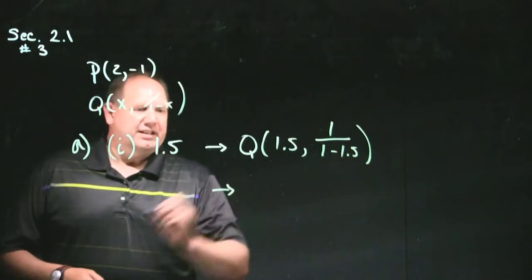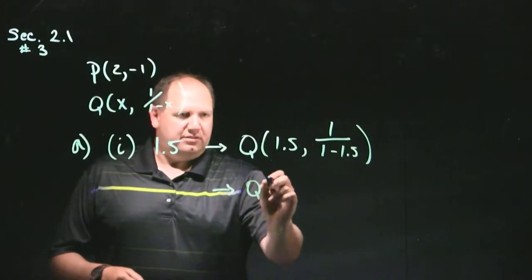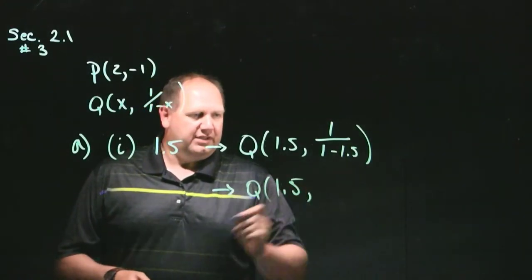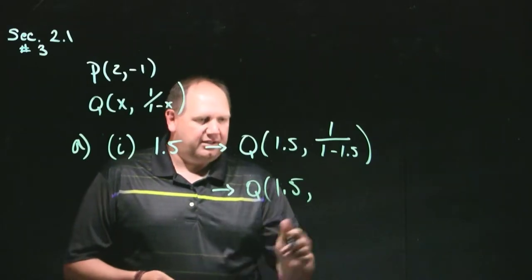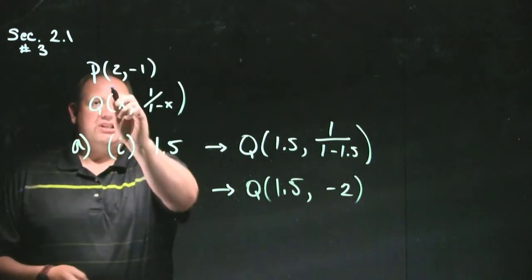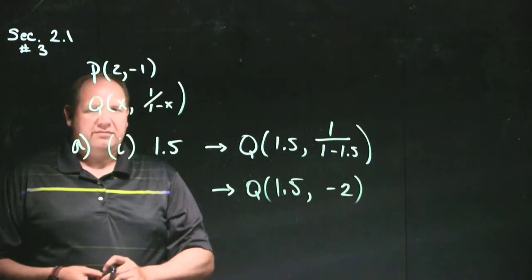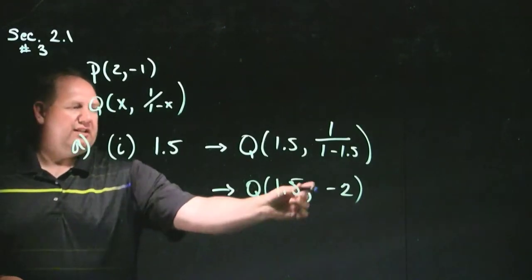So I get the situation where I have q with the point 1.5 in for x, and 1 divided by 1 minus 1.5. And when I simplify that, I get q is 1.5, and this part over here, when I plug that into my calculator, simplifies to minus 2. So now I have the point p, which is 2 comma negative 1, and the point q, which is 1.5 comma negative 2.